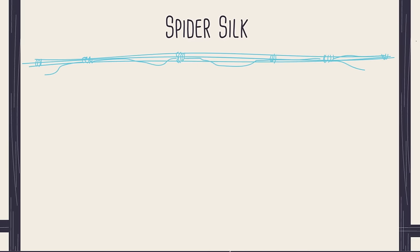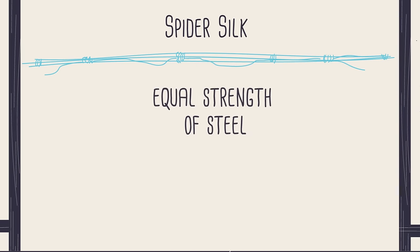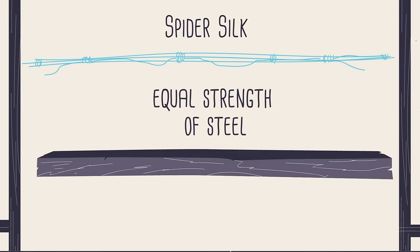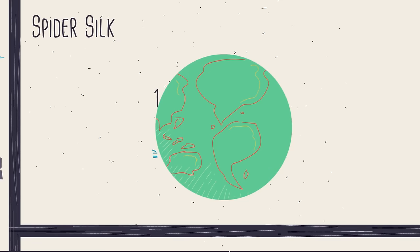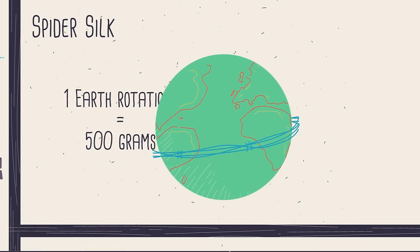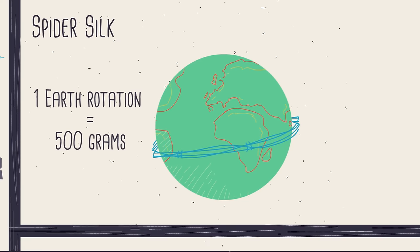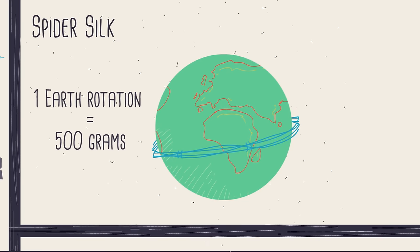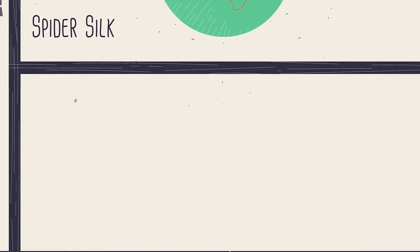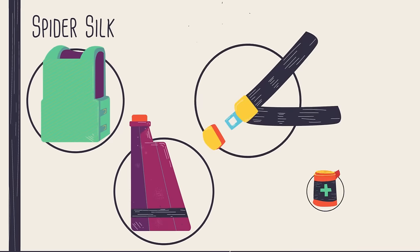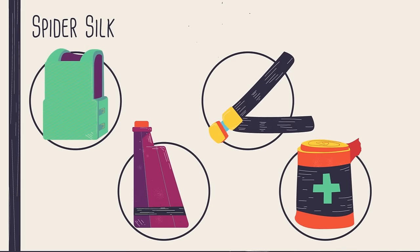The spider silk is pretty incredible. It's as strong as steel, but so light that a strand long enough to circle the earth would weigh less than 500 grams. So there are thousands of uses for such a unique material.